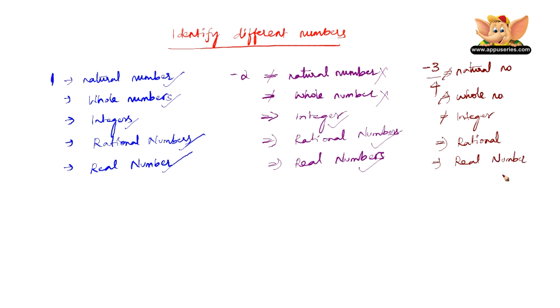So therefore, minus 3 by 4 is a real number, it is a rational number, but it is not an integer, it is not a whole number, it is not even a natural number.